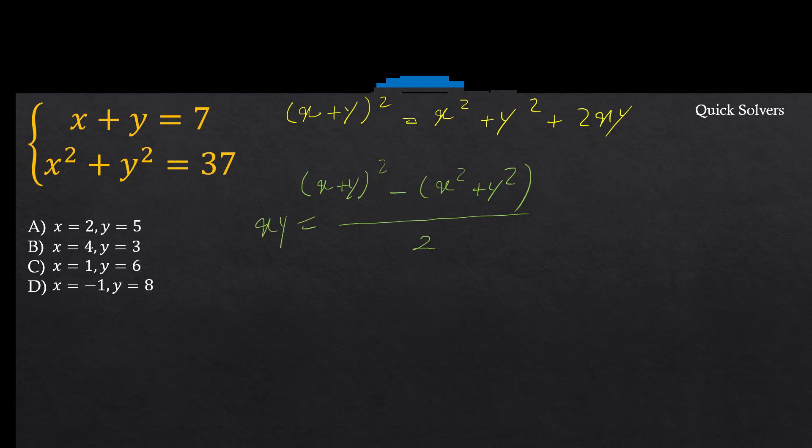Now I replace x + y and x² + y² by the numbers that we have: xy = (7² - 37) / 2 = 12 / 2 = 6. So we already knew x + y = 7, and now we know xy = 6.